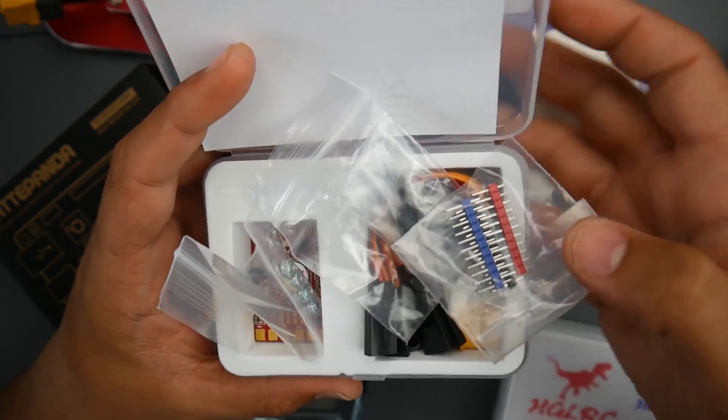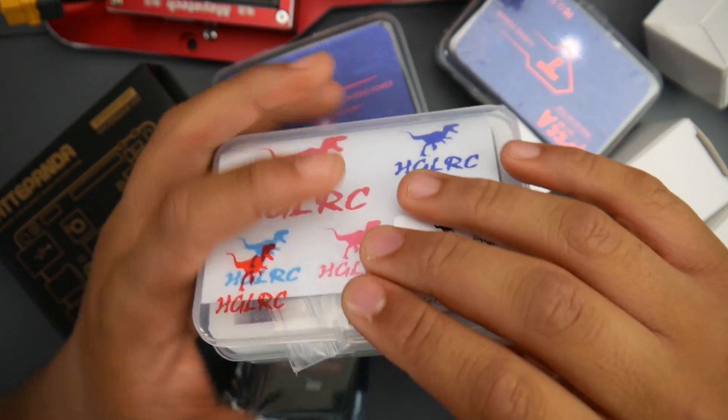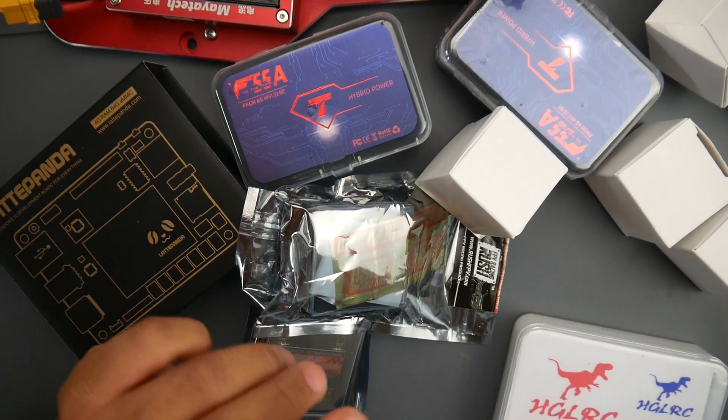We're going to be seeing this in a later video up close because I do have another wing build on the way which we'll use this guy on. Let's put this to the side. They've also sent me, well actually I requested when they contacted me, their 6S motors for three inch quadcopters.